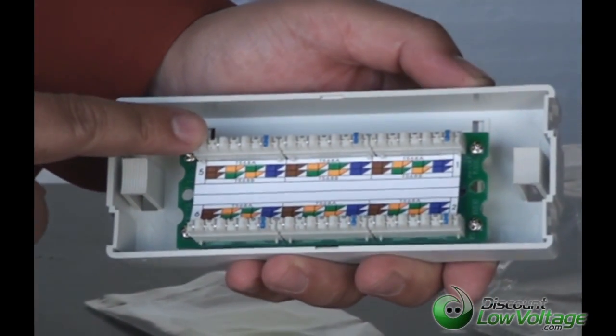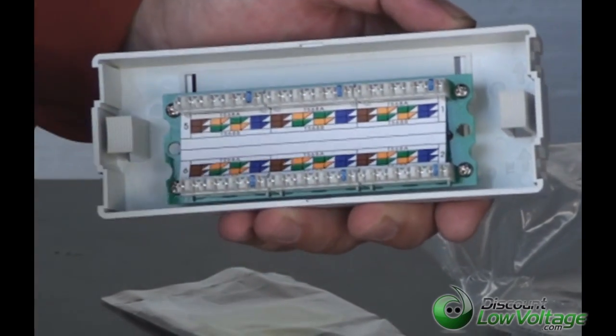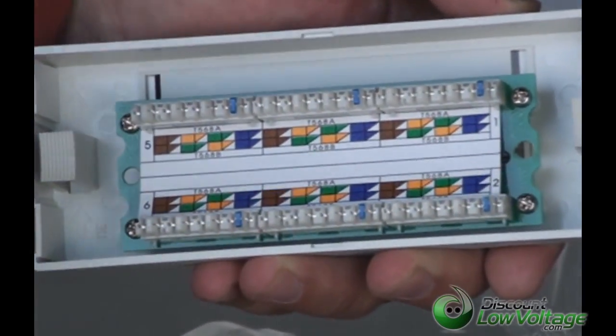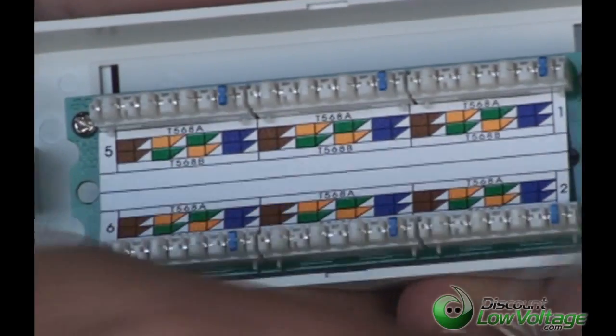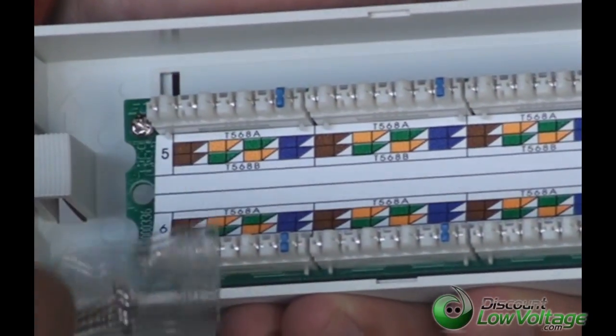This is how the back looks like. It's 568A or 568B wiring color scheme on the panel itself. It also includes a couple of screws here so you can mount this to the wall.